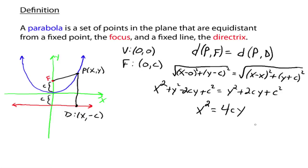That is the standard form for a parabola with a vertex at the origin. If you know the c value — the distance from the vertex out to the focus — then you automatically know the equation of the parabola. You could also write it as y equals 1 over 4c times x squared. I typically like to have y isolated, but you need to be able to go between both forms. This completes the derivation of our equation for a parabola with the vertex at the origin.